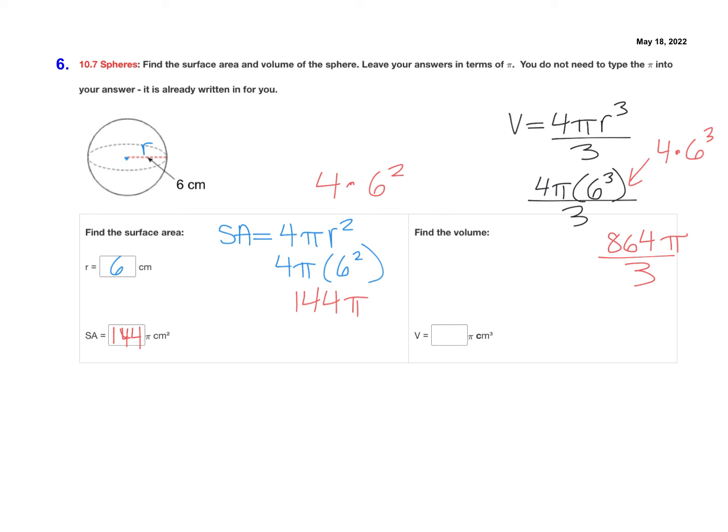And if you take 864 and you divide that by 3, I just again typed that in my calculator, it's giving me 288. So that makes the volume of this sphere 288 pi centimeters cubed.